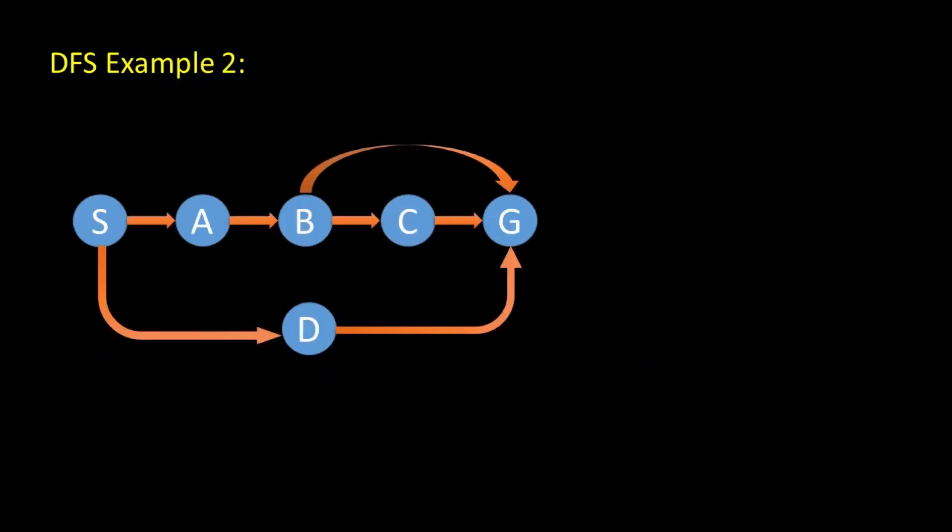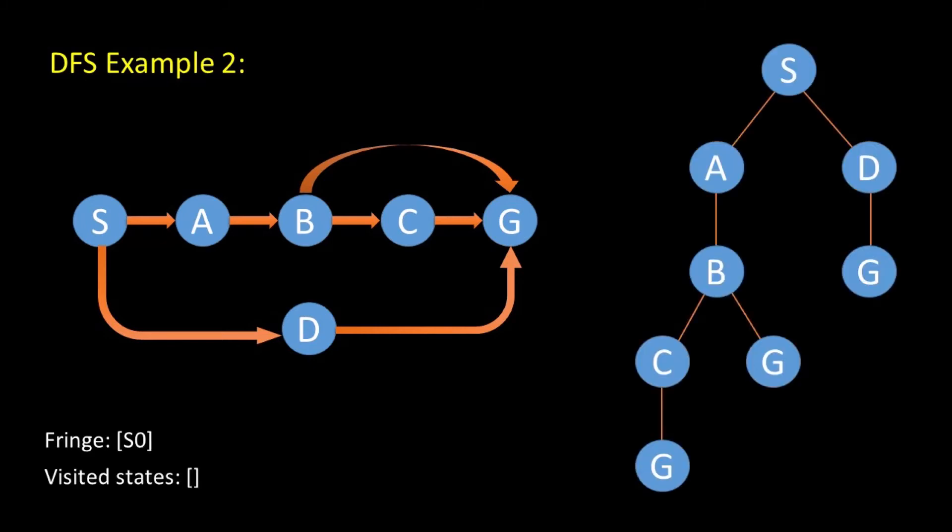Now we'll look at a second example. For this example, the graph can also be represented as a tree. Here S is the starting node and G is the goal state and all the other conditions are as for our previous example. So let's start. We visit S. Is S the goal node? No. So we expand S to get A and D. We take the node with a higher alphabetical priority. We visit A. Is A the goal node? No. So we expand A to get B.